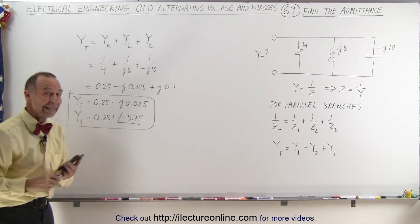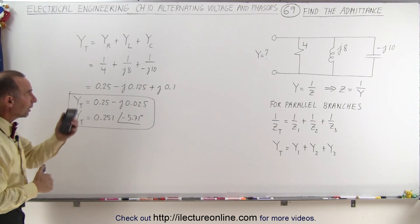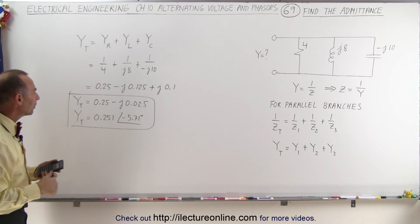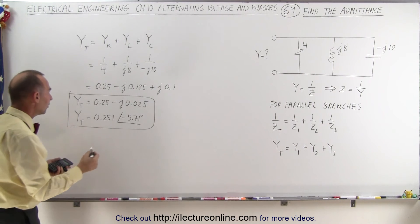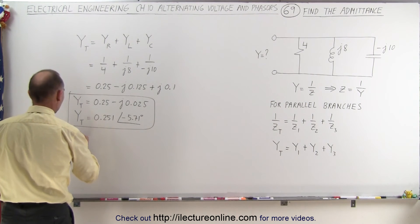So you can see that it's quite easy to find admittance for a parallel circuit. Now, can we convert that into an impedance? And the answer is certainly.